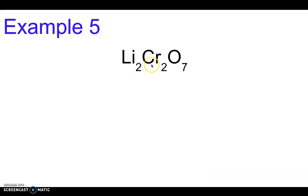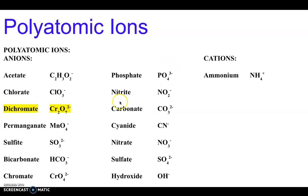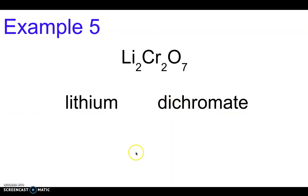Next up we have Li2Cr2O7. Cr2O7 is actually all one polyatomic ion so we'll be looking for that on the chart. Li is lithium, Cr2O7 is dichromate. So this just becomes lithium dichromate.